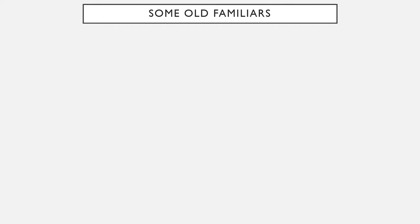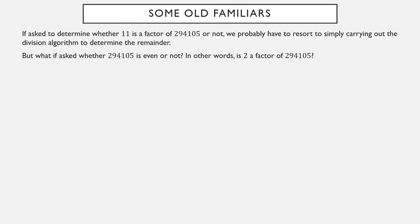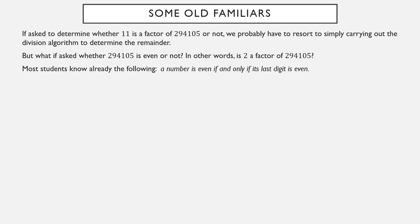Some divisibility tricks are actually well known to people. For example, is the number 294,105 divisible by 11? Probably what most people will do is start doing long division to determine if the result is a whole number, or carry out the division algorithm to determine the remainder. But if I ask you, is 294,105 even — is 2 a factor of it? You can probably already see that it's not even, because a number is even if and only if its last digit is even, and the last digit is 5, which is not even.